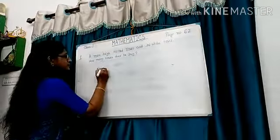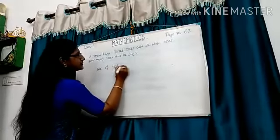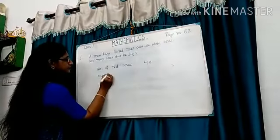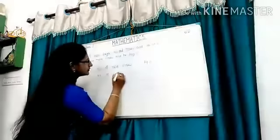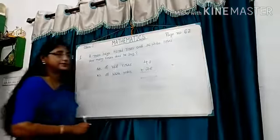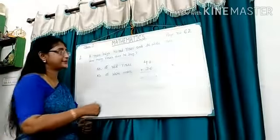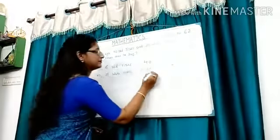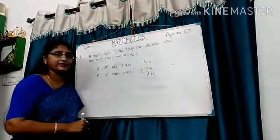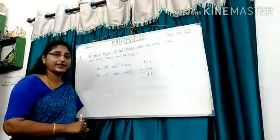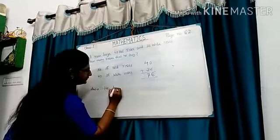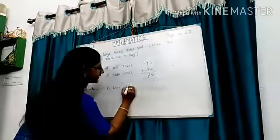Number of red roses: 40. Number of white roses: 36. Let's add — 0 plus 6 is 6, and 4 plus 3 is equal to 7. The answer is 76. He buys 76 roses.